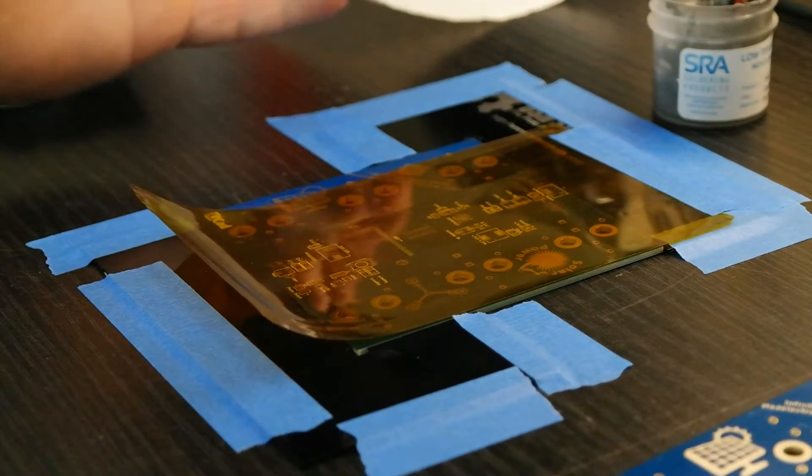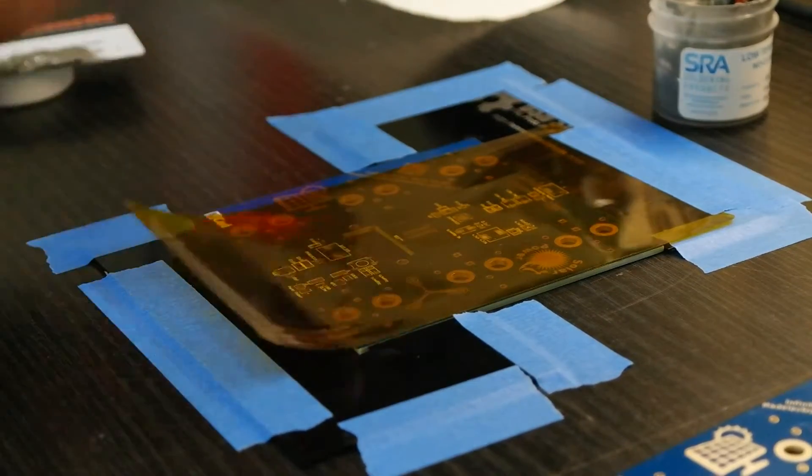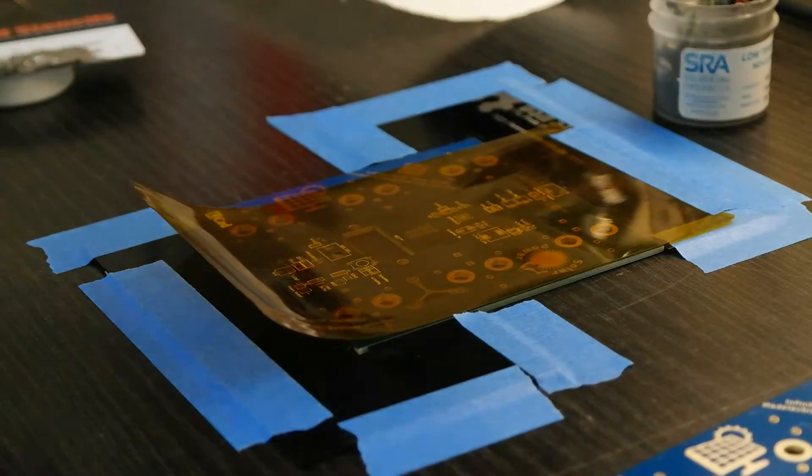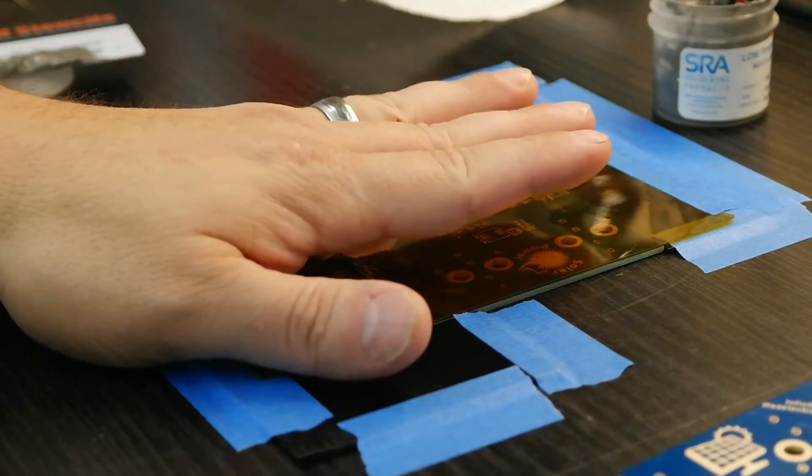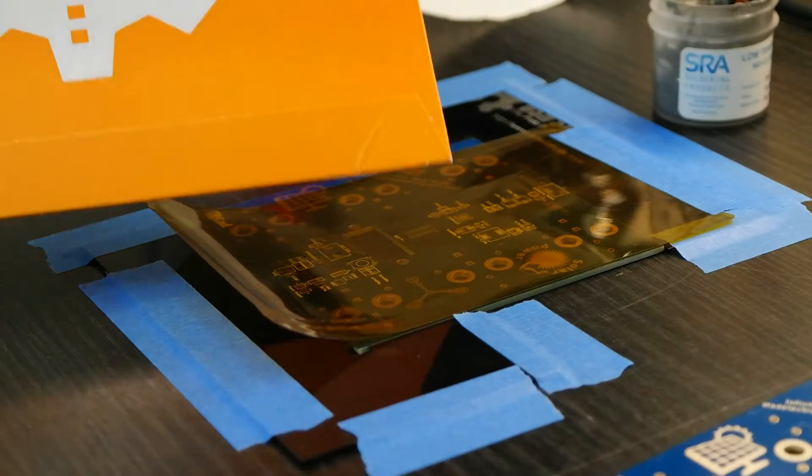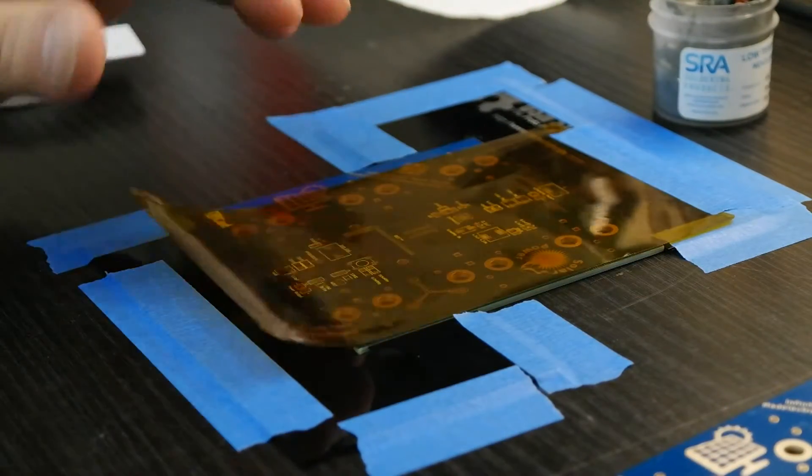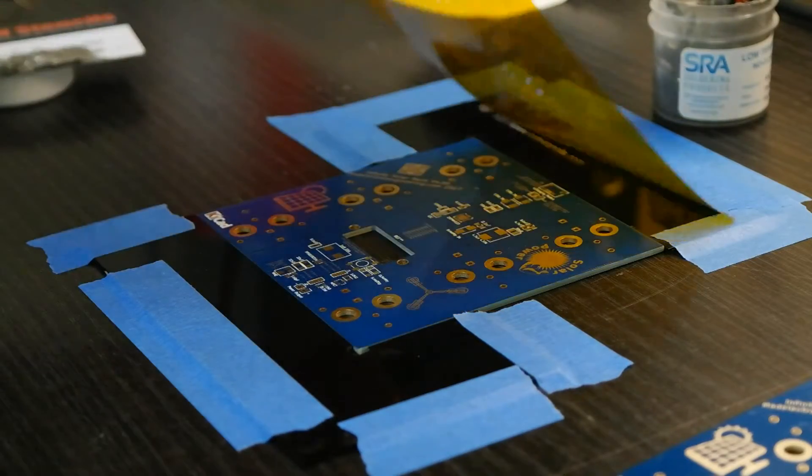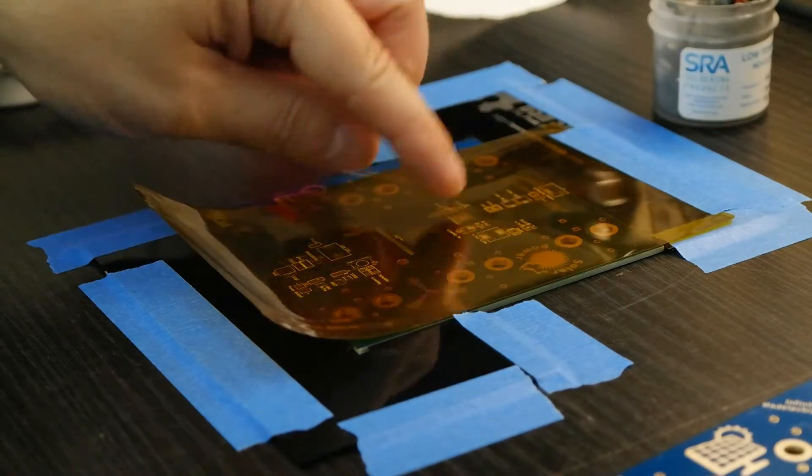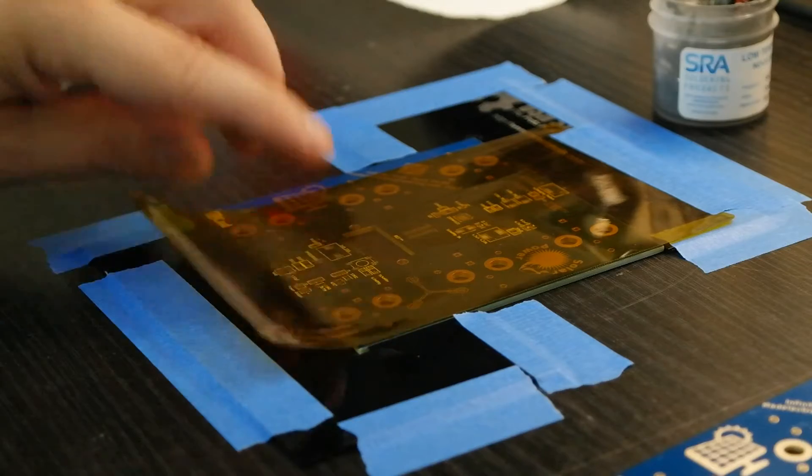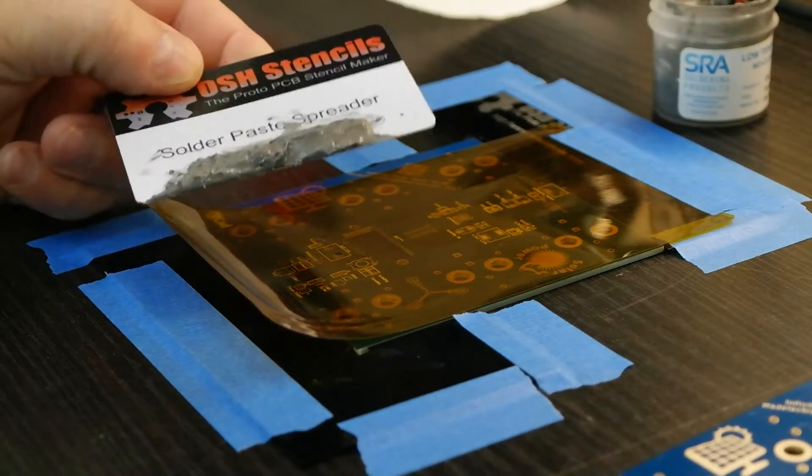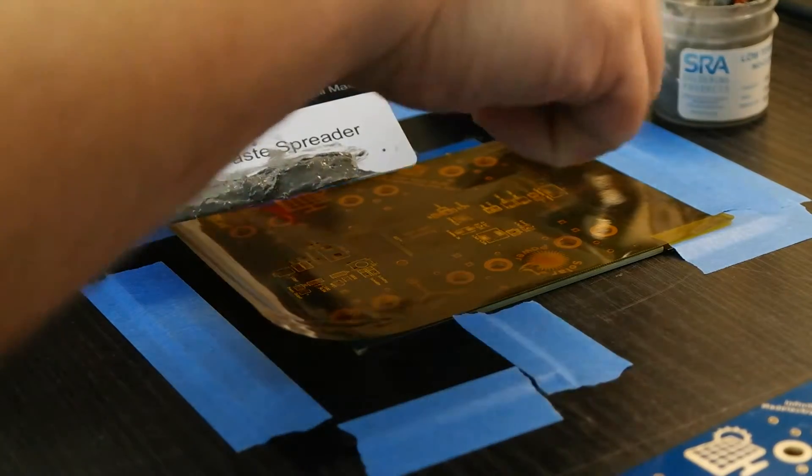The first thing you're going to notice with kapton: it always has a slight roll to it. Whether that's an advantage or disadvantage you could decide for yourself. But just keep in mind even if you store kapton flat, which this has been stored flat in their own little envelopes, they always have a little bit of roll.